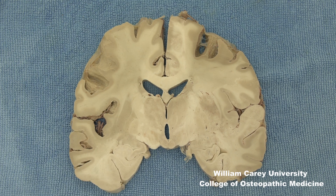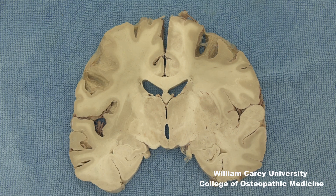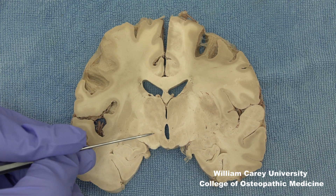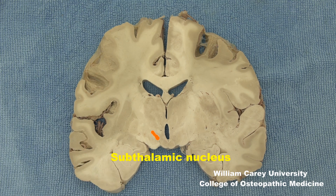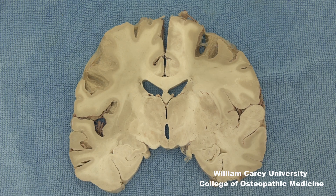While we are in this section at the mammillary body level, the subthalamic nucleus needs to be recognized, as I am outlining now. This is one of the intrinsic components in basal ganglia related neurocircuitry.